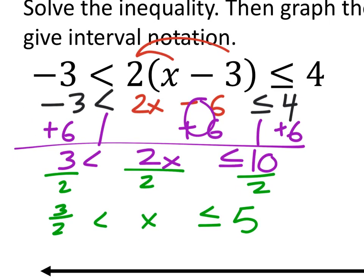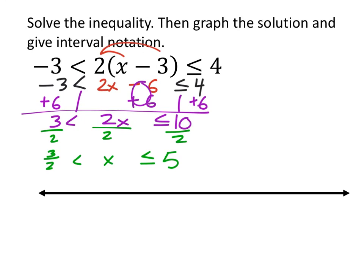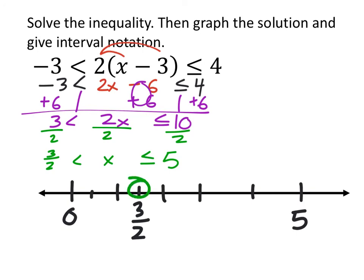Three halves equals 1.5 if preferred. At three halves, open circle eating the x — goes right. At five, closed circle not eating the x — goes left. The line going right from three-halves and the line going left from five intersect in between. The graph shows x between three-halves and five.